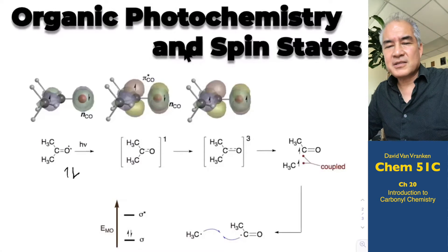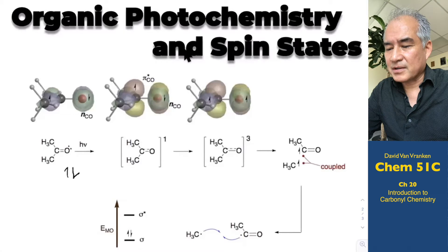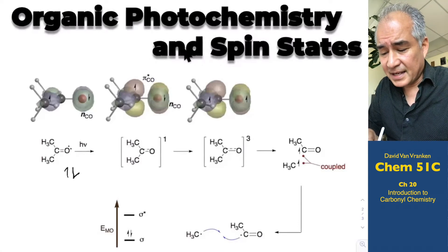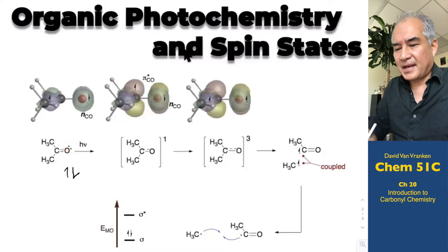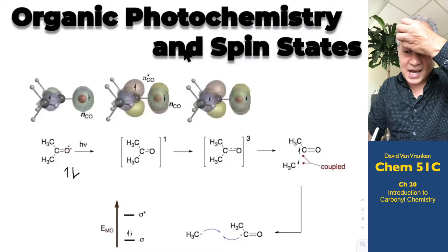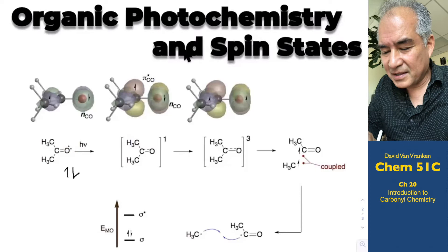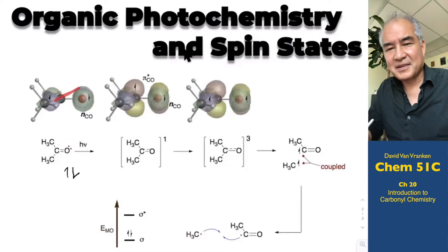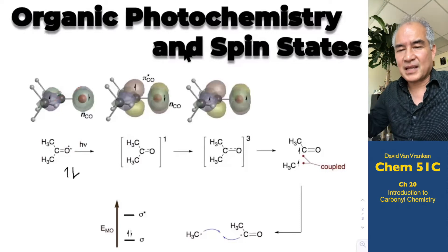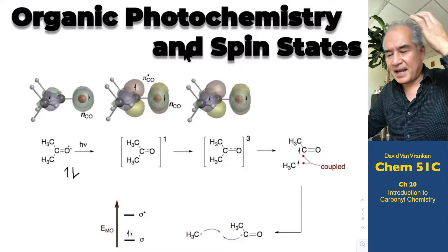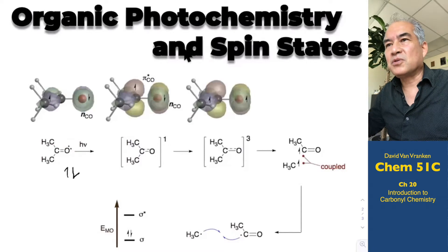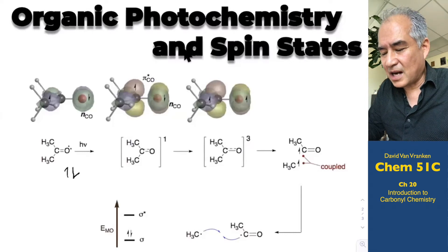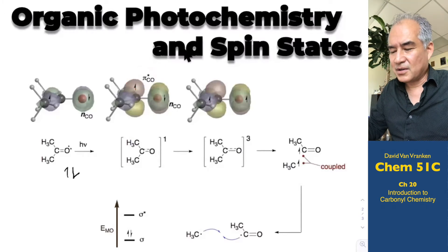Where would electron spin become important in organic chemistry? The place is photochemistry. For example, if I take two electrons in a non-bonding orbital, they exist where one electron spends half its time in the green-phased lobe and the other half in the purple lobes. If you get this molecule to absorb a photon of light — that's how sunscreens work; sunscreens are ketones — you push one electron from a lower-energy non-bonding orbital up into a high-energy pi-star orbital. That's called an n-to-pi-star transition.